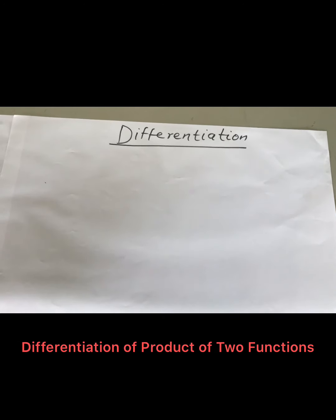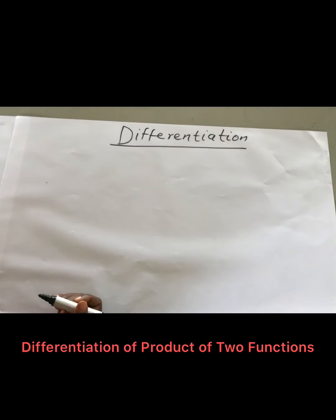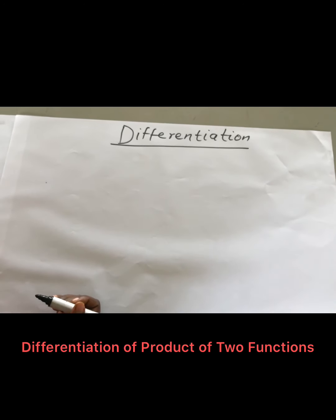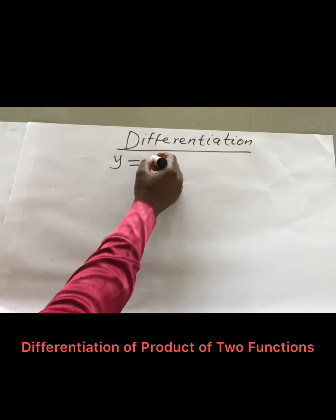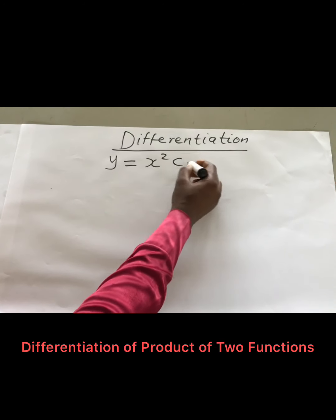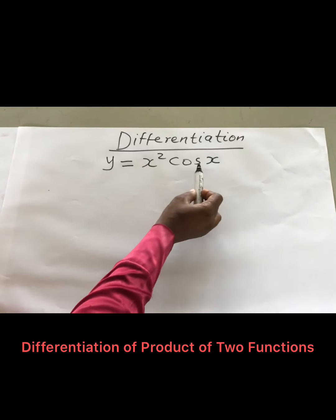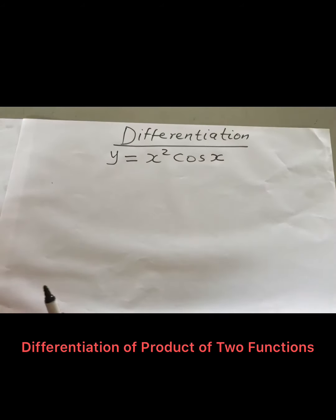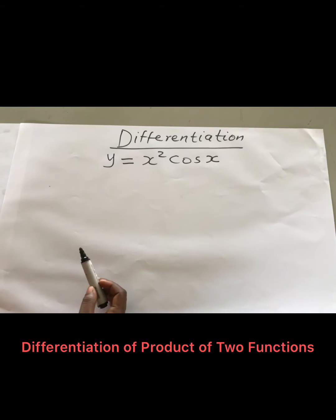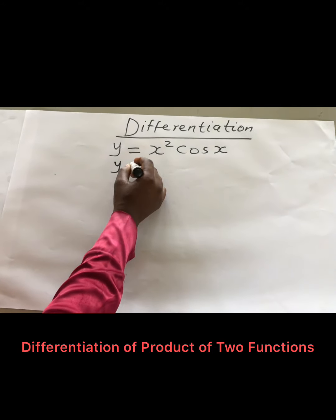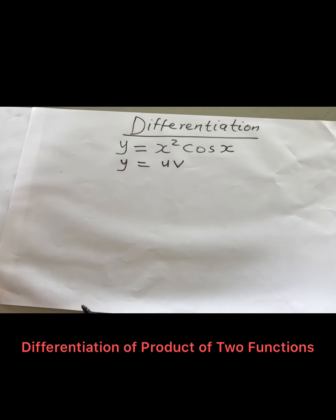Welcome. Today we'll be looking at differentiation — specifically differentiation of products, products of two functions. I have a quadratic function and a trigonometric function. So how do we find the derivative of the product? Let's say we have Y equal to these functions, called U and V.